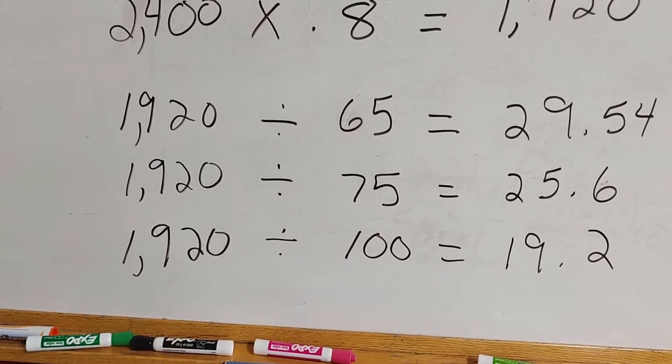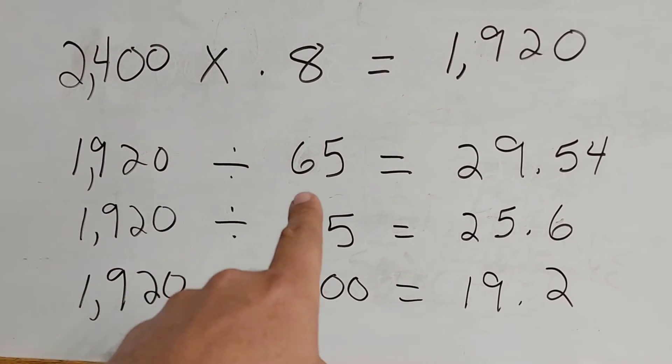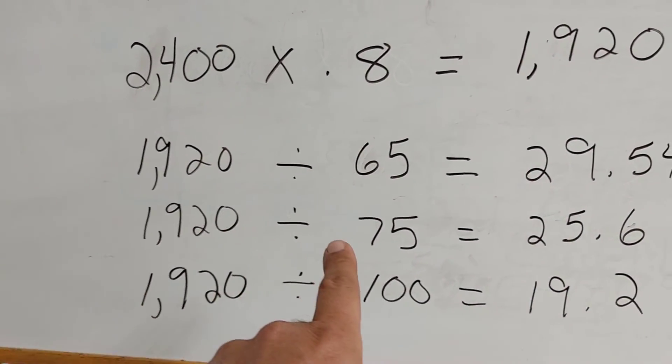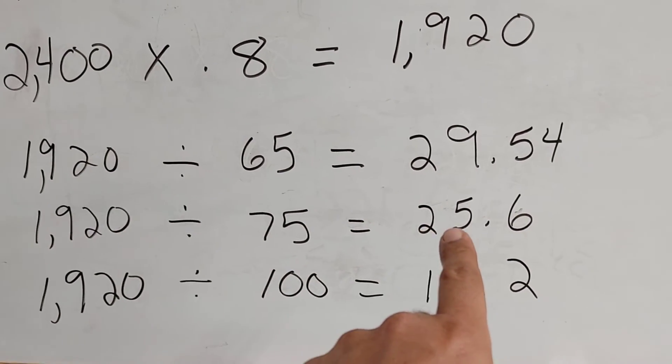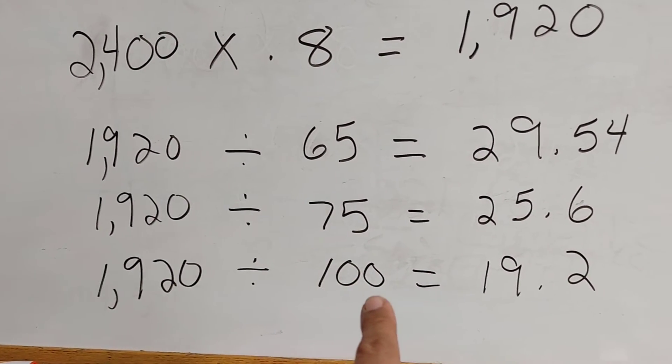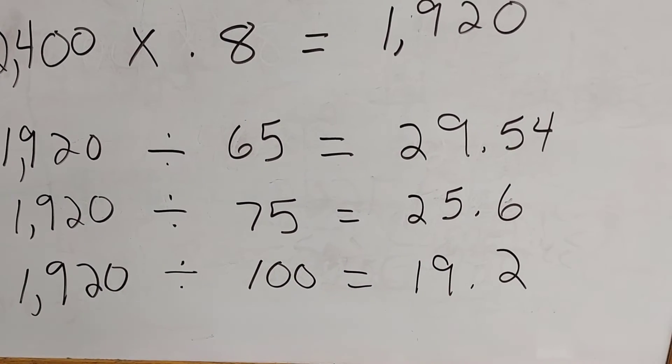Now let's look at the calculations again. 1,920 divided by 65 gives us 29 fixtures. 1,920 divided by 75 gives us 25 fixtures. And 1,920 divided by 100 gives us 19 fixtures.